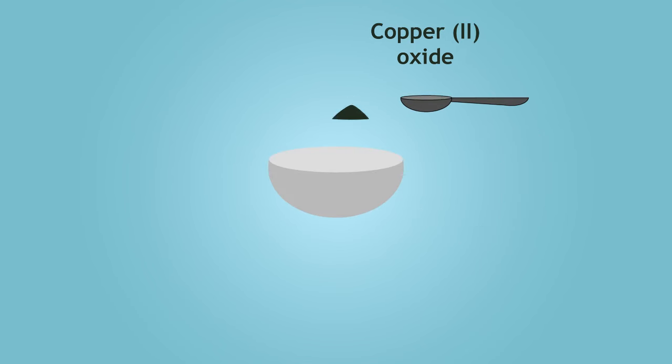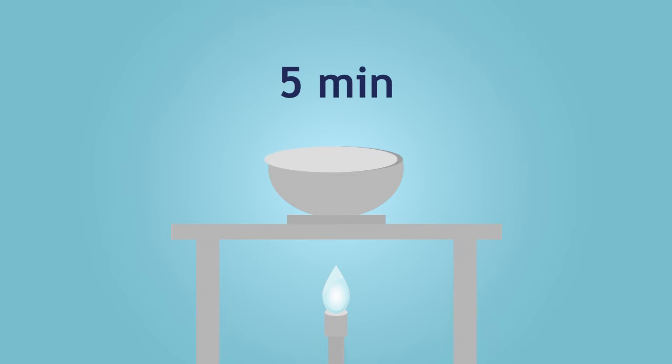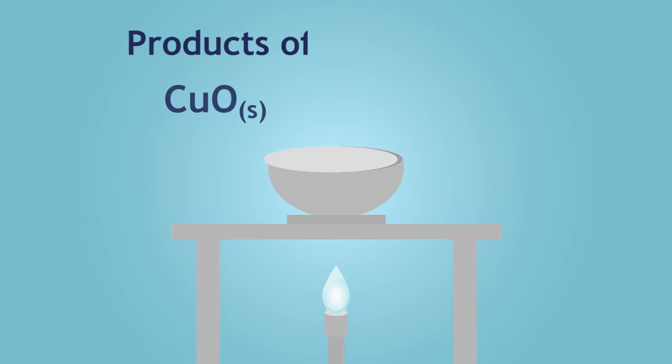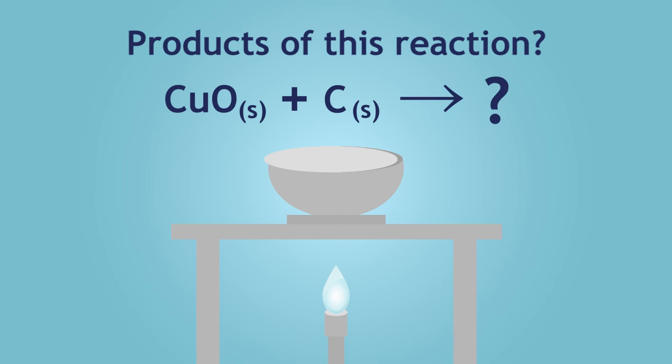Place 3 spoonfuls of copper 2-oxide in a crucible and 1 spoonful of charcoal, which is essentially carbon. Heat this using a Bunsen burner with the crucible lid slightly ajar for approximately 5 minutes. While that is in progress, why don't you grab a piece of paper and a pencil and predict the products of this single displacement reaction. Pause the lesson and resume when ready.